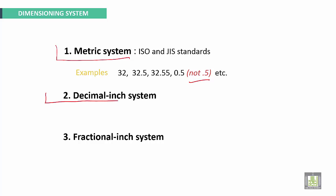The second one is called the decimal-inch system, such as 0.25 (not .25), 5.375, etc.